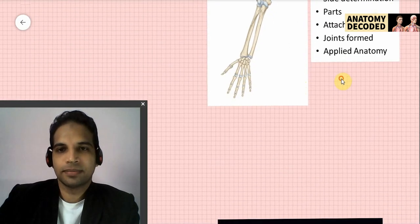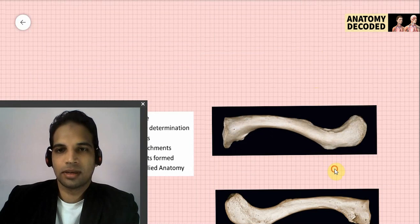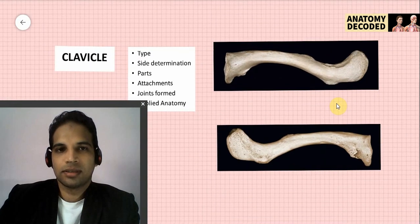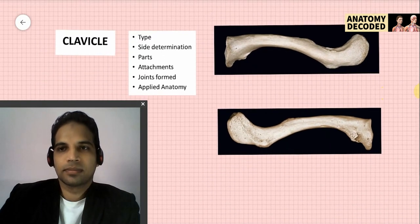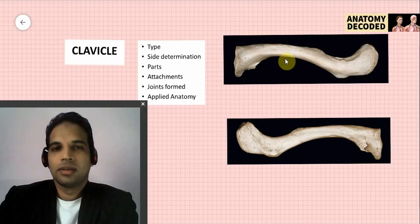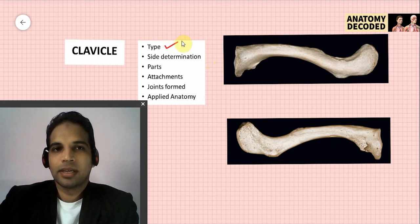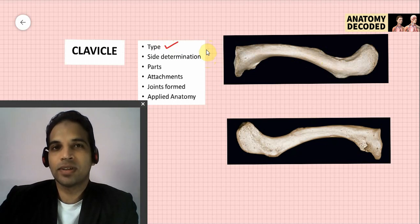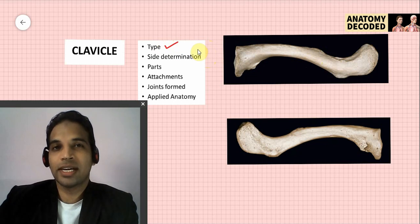Let's begin with the clavicle. The clavicle is an example of a modified long bone. It is called a modified long bone because it has certain peculiar characteristic features which are different from that of a typical long bone. You can read about the various peculiarities of the clavicle to understand why it is a modified long bone.